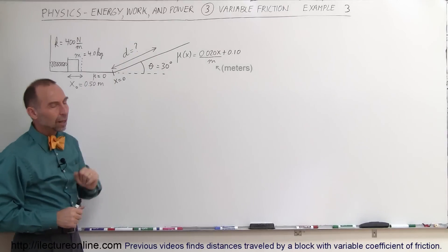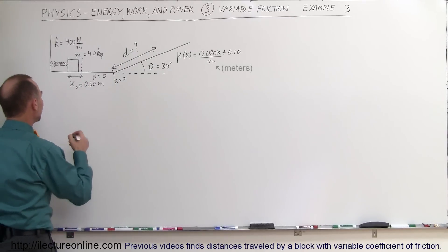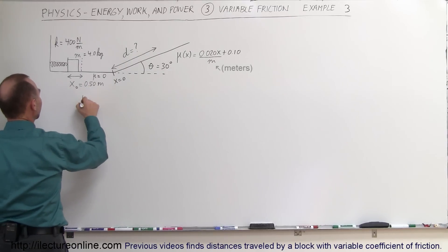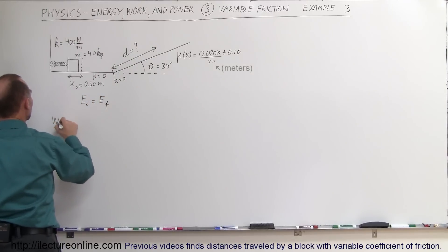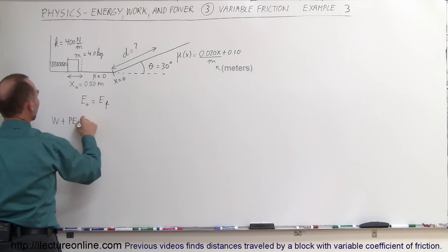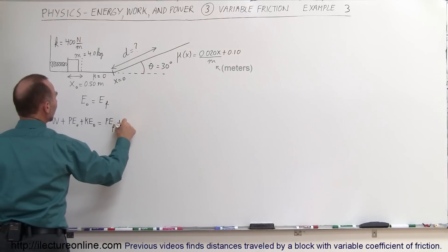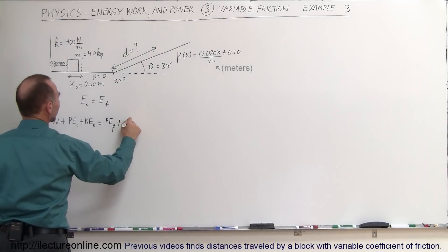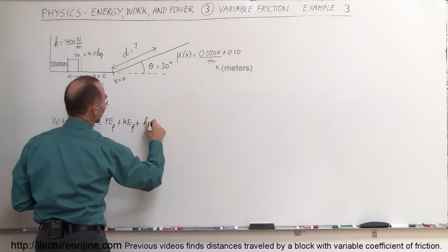How far up the incline will the block go? The approach is exactly the same as before: energy initial equals energy final, meaning any work put into the system plus initial potential energy plus initial kinetic energy equals final potential energy plus final kinetic energy plus heat loss to overcome friction.